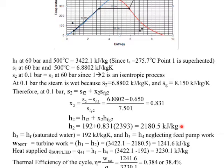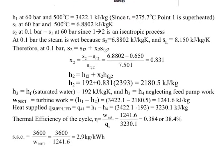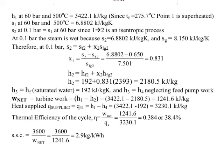Now, the rest of the calculation, as we will notice, is identical to example 1, but let's follow through. We note that h_3 is h_f, saturated water, 192 kJ per kilogram. And we are going to assume h_3 equals h_4, neglecting pump work.